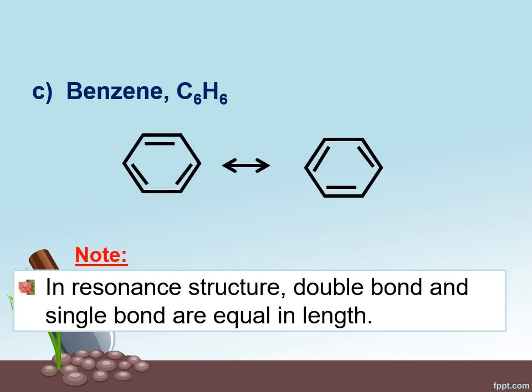The third example is benzene. Benzene has two resonance structures as shown in the slide. So write this down and as we are writing it down we notice that the double bond can move around the ring of benzene. That is how resonance structure makes the stability of certain molecules.